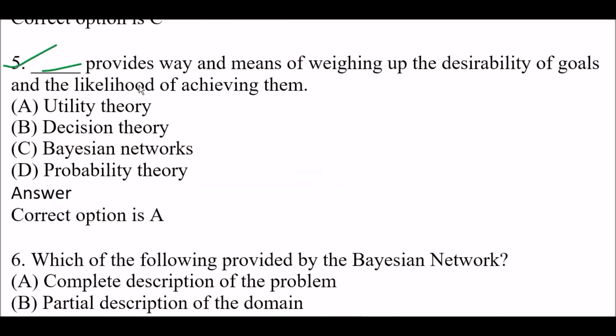Next question: Blank space provides way and means to weighing up the desirability of goals and the likelihood of achieving them. Option A: Utility theory, Option B: Decision theory, Option C: Bayes network, Option D: Probability theory. Right answer is Option A — utility theory provides way and means of weighing up the desirability of goals and likelihood of achieving them.